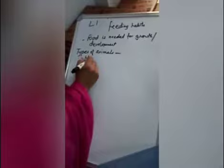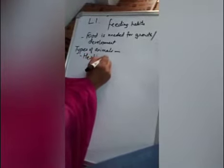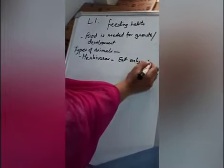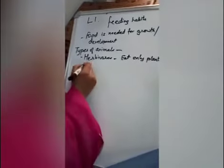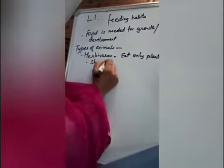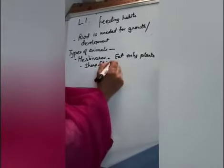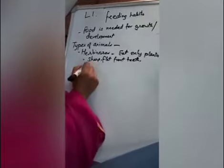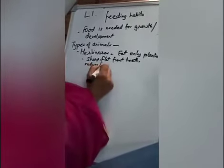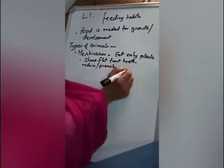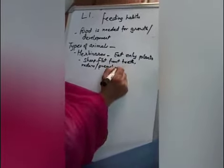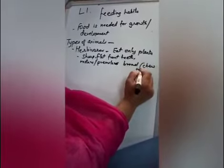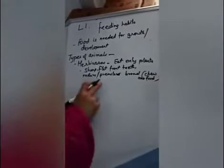The first one is herbivores. You have read about this in class 4 also. Herbivores are the animals that eat only plants. For eating plants, they have sharp and flat front teeth, and molars and premolars — that is the side teeth. These teeth are adapted for chewing and are broad so that they can chew the food properly.